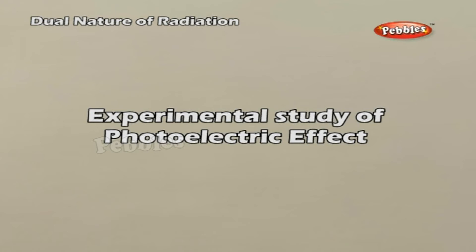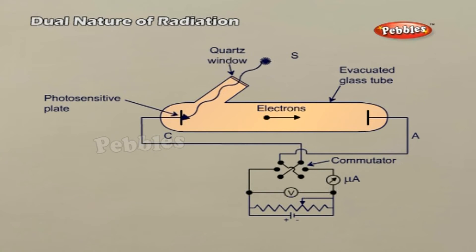Experimental study of photoelectric effect. The arrangement consists of an evacuated glass tube having a photosensitive plate C and another metal plate A. Monochromatic light from the source S of sufficiently short wavelength passes through the window W and falls on the photosensitive plate C, that is the emitter. The electrons are emitted by the plate C and are collected by the plate A, that is the collector, by the electric field created by the battery.